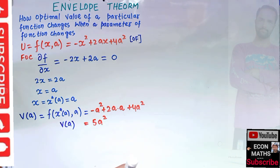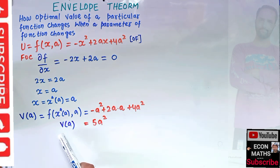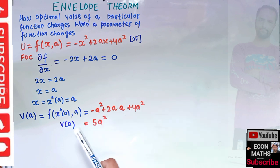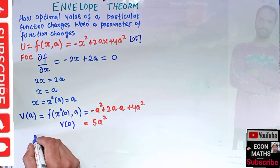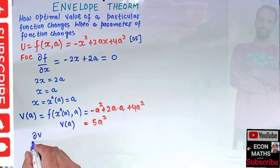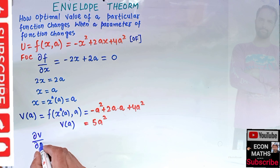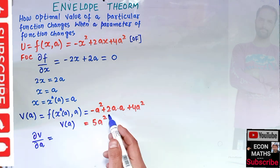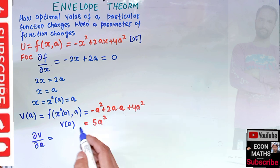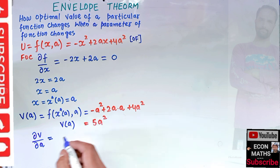Now if we take the derivative of this optimal value function V(a) with respect to the parameter a — that is, dV/da — we differentiate 5a squared and get 10a.